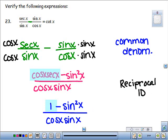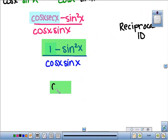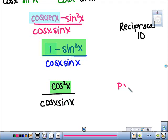And now, hopefully you're noticing that the numerator is a Pythagorean ID. That right there. That is the same as cosine squared. And it's over cosine x, sine x. So that was Pythagorean.